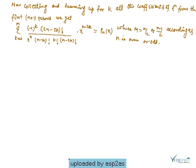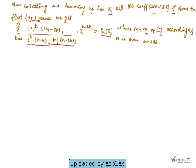Collecting and summing for all k the coefficients of t^n from the first n+1 terms, we get the summation from k=0 to M of (-1)^k · (2n-2k)! / (2^n · (n-k)! · k! · (n-2k)!) · x^(n-2k), which equals Pn(x). This equation is equal to Pn(x), the Legendre polynomial.